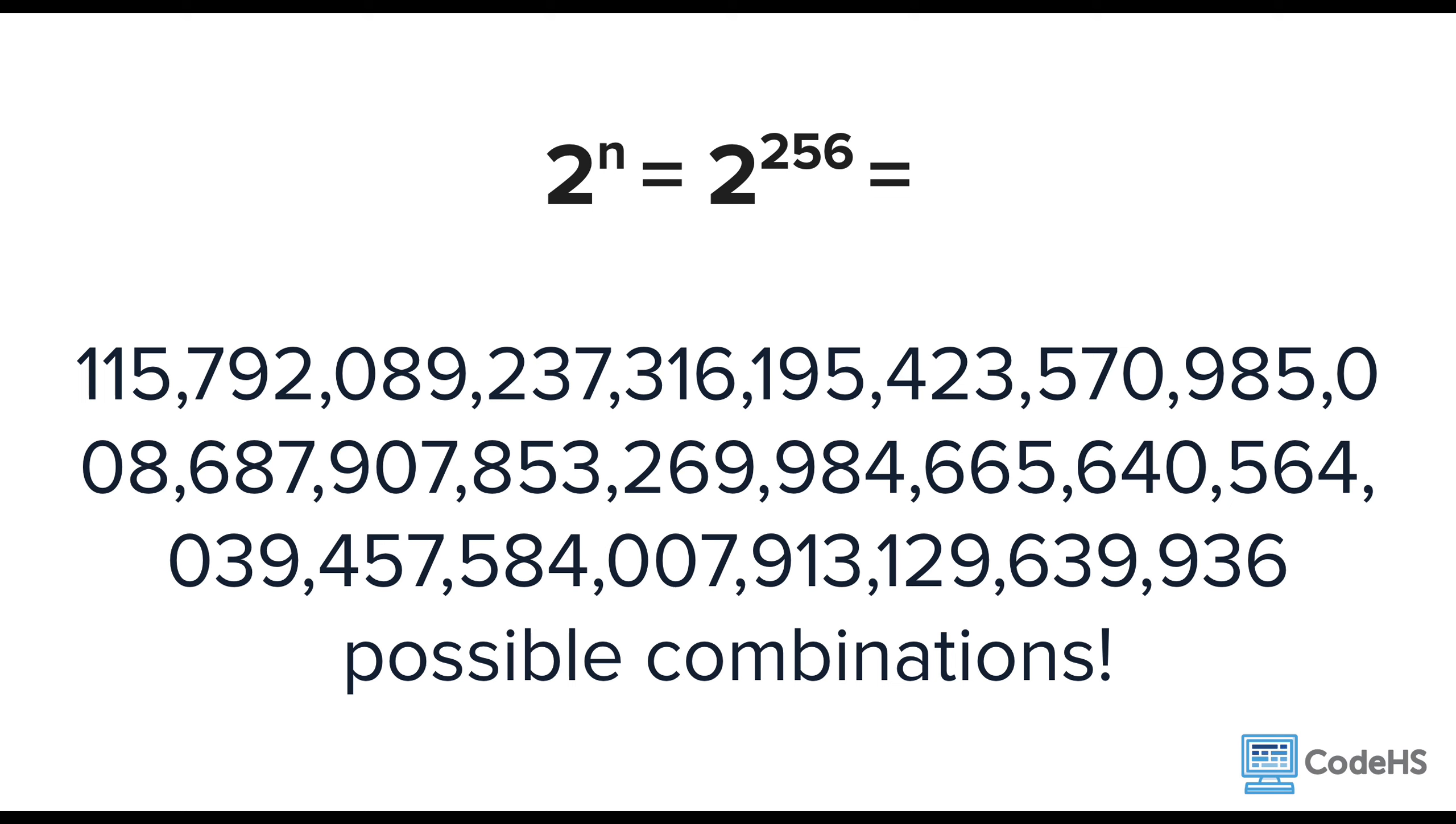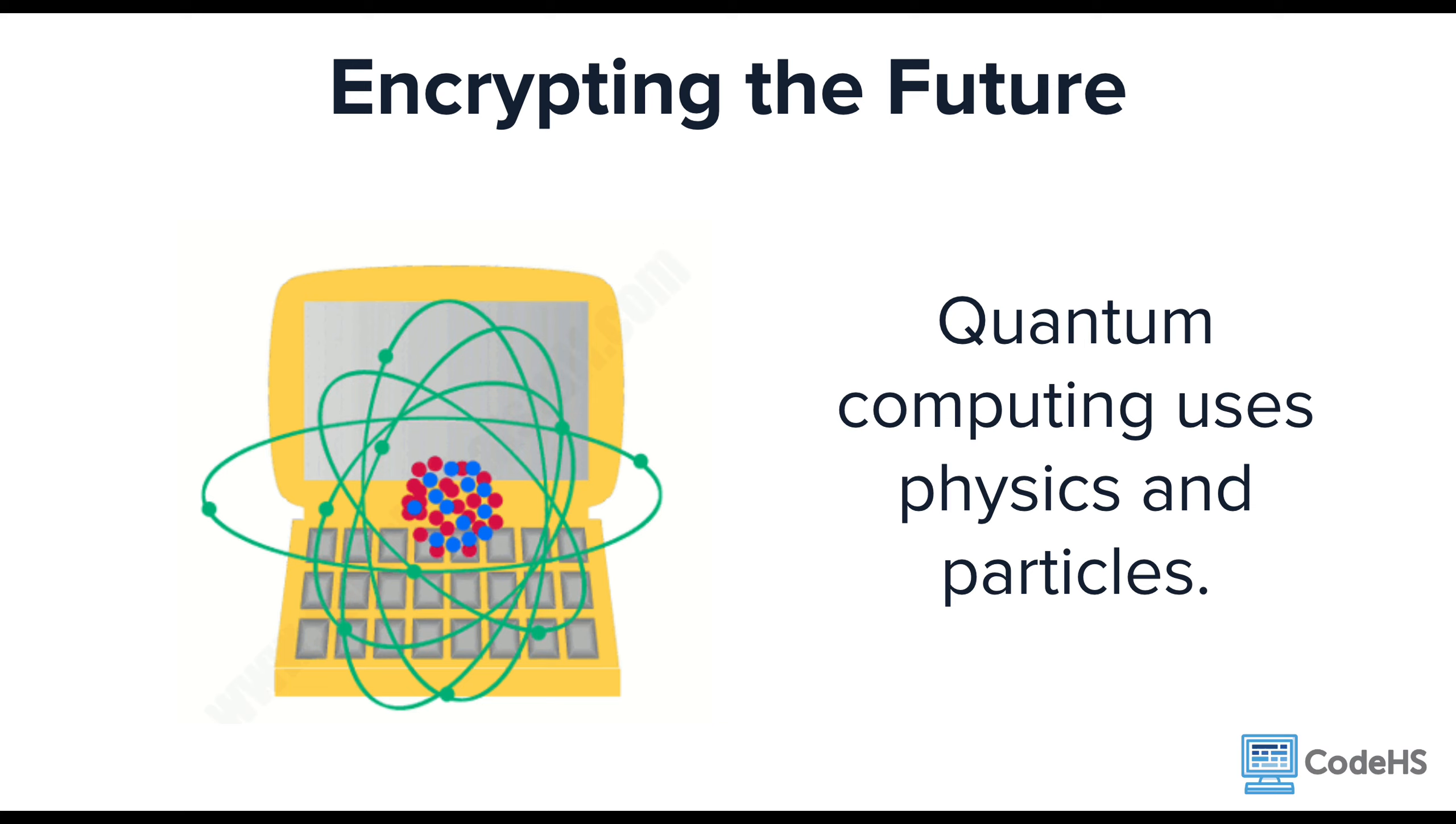While this may seem safe for now, computing power continues to get better and faster. So we do need to continue thinking of ways to keep our data safe on the internet. Cryptologists are already starting to work with encryption techniques that use quantum computing. Instead of using mathematical algorithms, a quantum computer encodes information in particles, like photons and electrons.